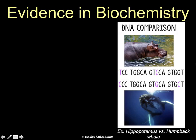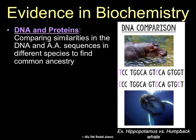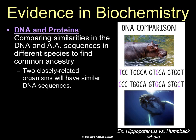Another field of science that provides evidence for evolution is biochemistry — studying DNA and proteins, the two macromolecules that can be used to identify who you are. Scientists compare similarities in DNA between organisms and amino acid sequences in different species to look for common ancestry. Two closely related organisms will have similar DNA sequences. For example, looking at the hippopotamus and the humpback whale, there are only three-letter differences in this section of their DNA sequences, which suggests they are closely related.